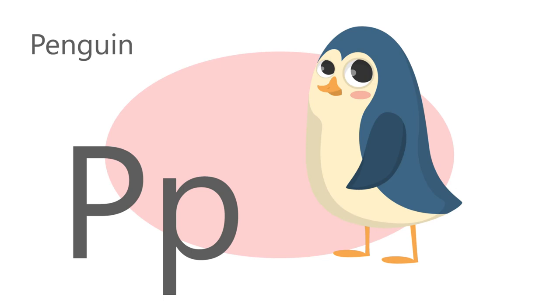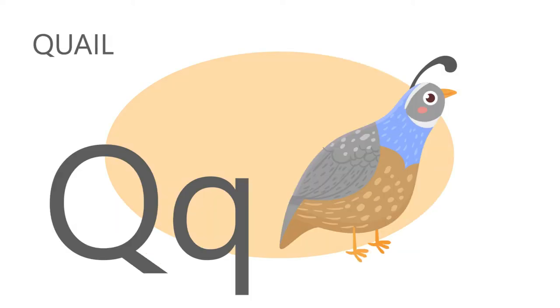P is for penguin. P, p, penguin. Q is for quail. Q, qu, quail.